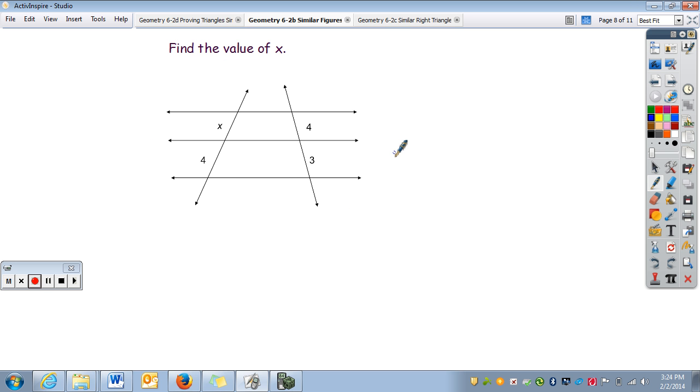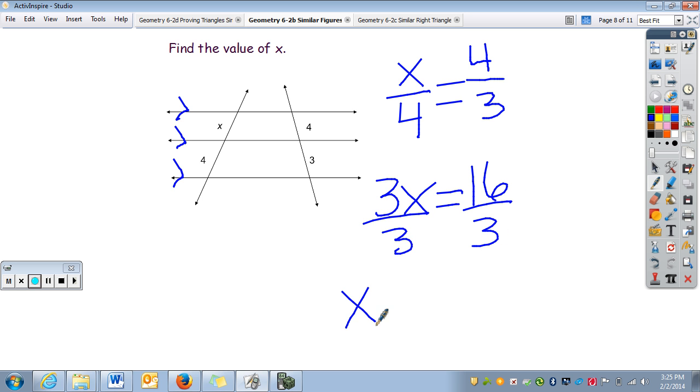I can set up a proportion to figure this out, if these are parallel to each other. Well, X goes with 4. Either 4, it doesn't matter. And then 4 goes with 3. Cross multiply, 3X equals 16. Divide by 3. X equals 5.3 repeating, or 5 and a third.